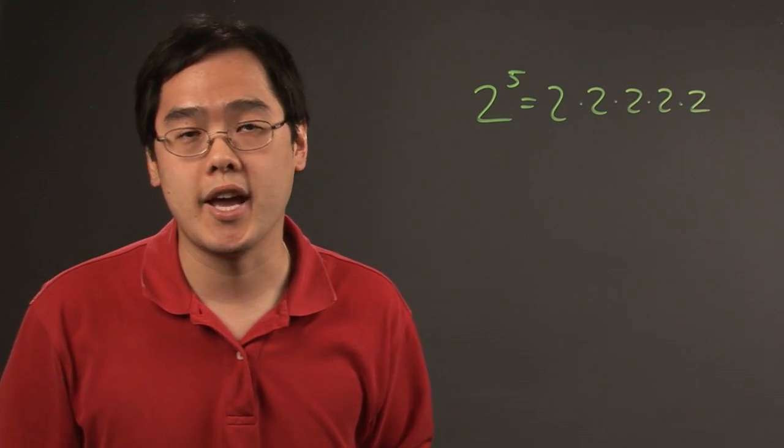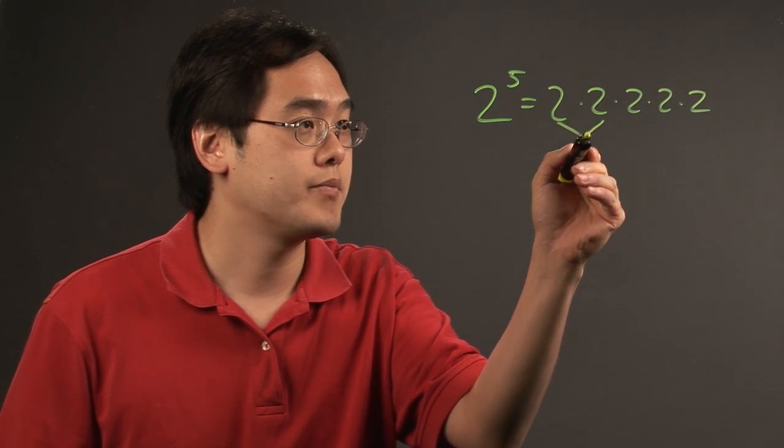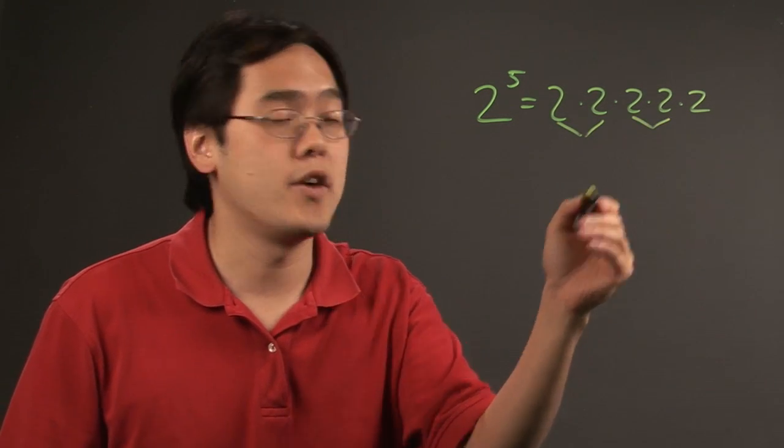Now, one way you can break down a very high exponent is if you were to section it off by breaking them off in pairs if possible.